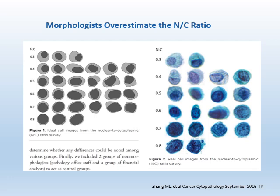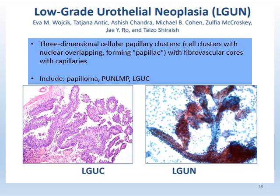NC ratio is an important diagnostic criterion in TPS. Studies have shown that human eyes are accurate in estimating NC ratio close to 0.7, but much less accurate for NC ratio close to 0.5. This chart is helpful in training your eyes to estimate NC ratio.